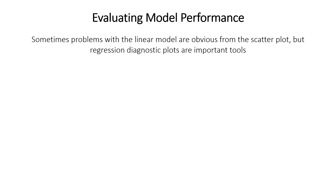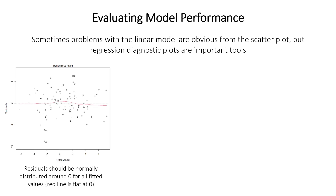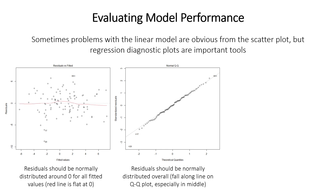The assumptions for linear regression are almost all about the residuals, not the raw data itself. You can use regression diagnostic plots to check them. One important plot is residuals versus fitted values — the fitted values being where each observation falls along the regression line. The residuals should be normally distributed around a mean of zero for all fitted values, so the red mean line should be flat and at zero with points spread equally across the range. You can also look at a QQ plot of the residuals to check overall normality.